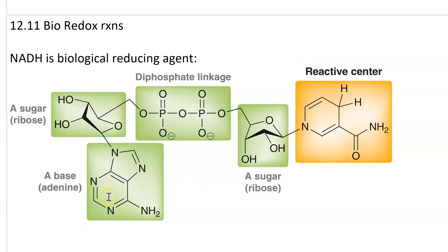The dinucleotide consists of two ribose sugars linked by a diphosphate. This is the nicotinamide portion, and right now it's in its reduced form — it's got an extra hydride right here.